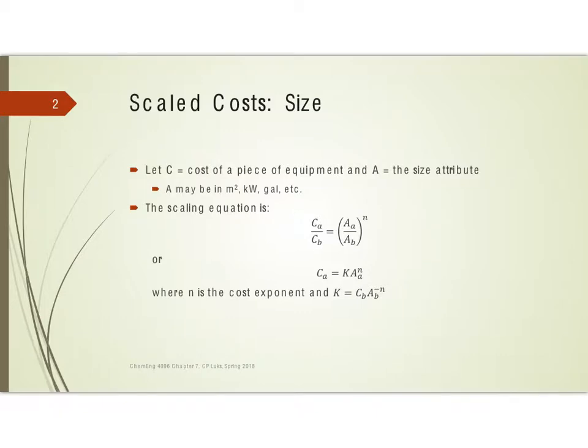We are looking at chapter 7 and this is going to be looking at when we have both changes in size and changes in time. So a quick review: if we had the cost of an item with a different size we could use this formula where n is some number that we can look up, and if you don't have data then you're going to just use 0.6 for n and we can use this to adjust for size.